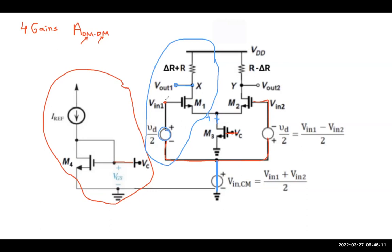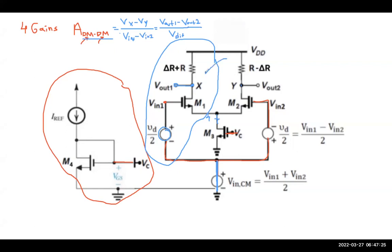Solving the half circuit differentially: this output divided by the differential input gives the gain ADM-DM. This is equivalent to solving the full circuit and computing (Vx − Vy) divided by (Vin1 − Vin2). Since Vin1 = Vd/2 and Vin2 = −Vd/2, the total differential input is Vd, and the half-circuit result matches.